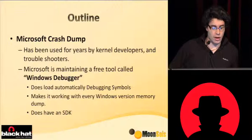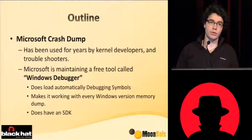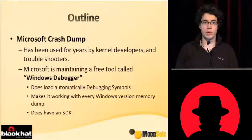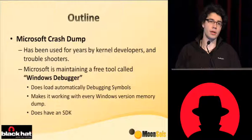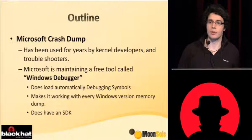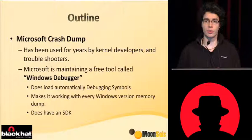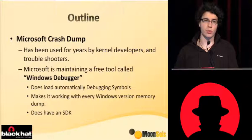Moreover, Microsoft maintains a free tool called the Windows Debugger, which has a notable advantage: it loads Microsoft symbols. This means it works with every version of Windows because you can retrieve symbols remotely from the Microsoft server. So if you have, for example, the beta of Service Pack 1 of Windows 7 and there are no tools to analyze a memory dump from it, you can convert a Windows hibernation file into a Microsoft crash dump for Windows 7 SP1, load it in Windows Debugger, and it will retrieve the symbols from the Microsoft server so you can do the analysis without being stuck.